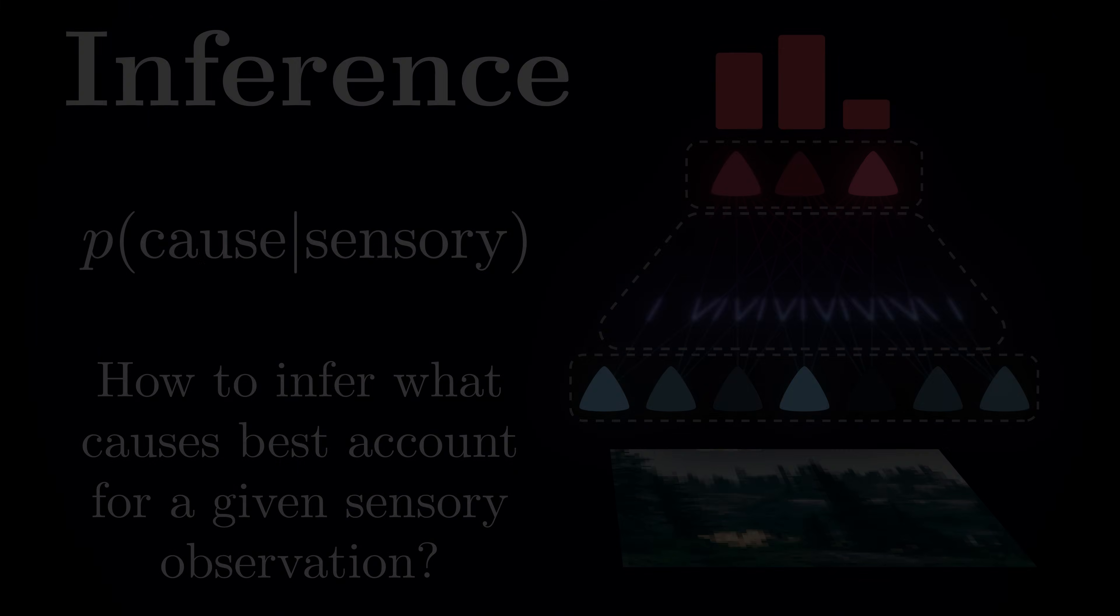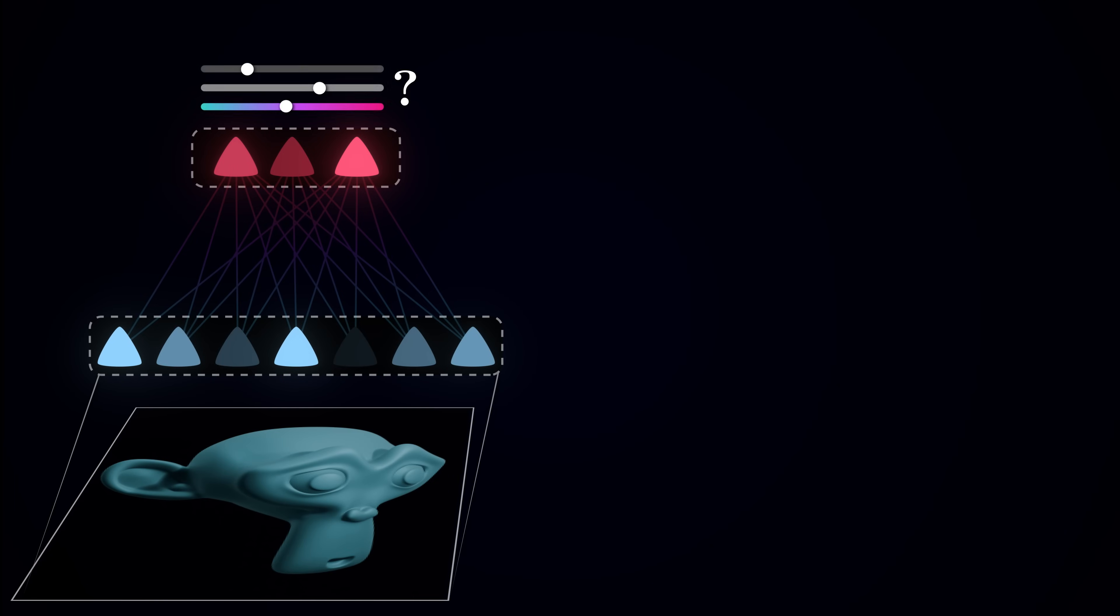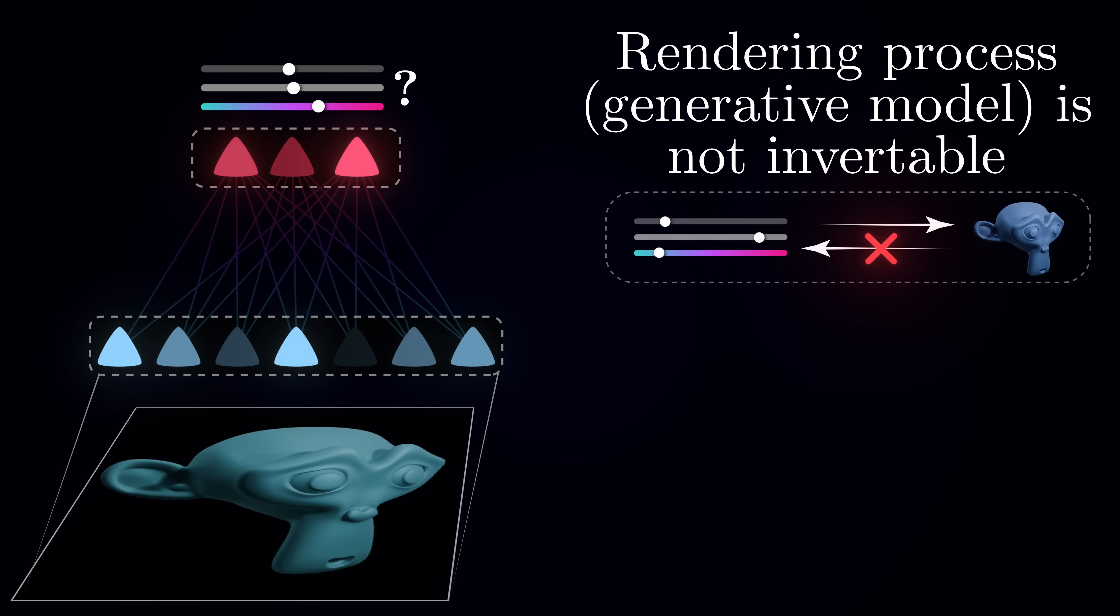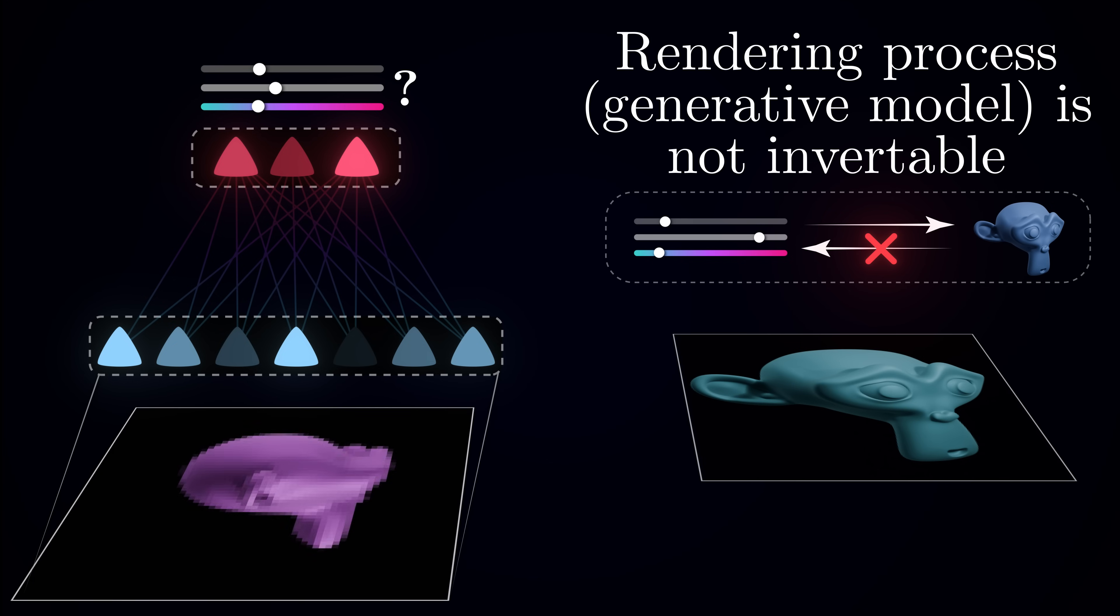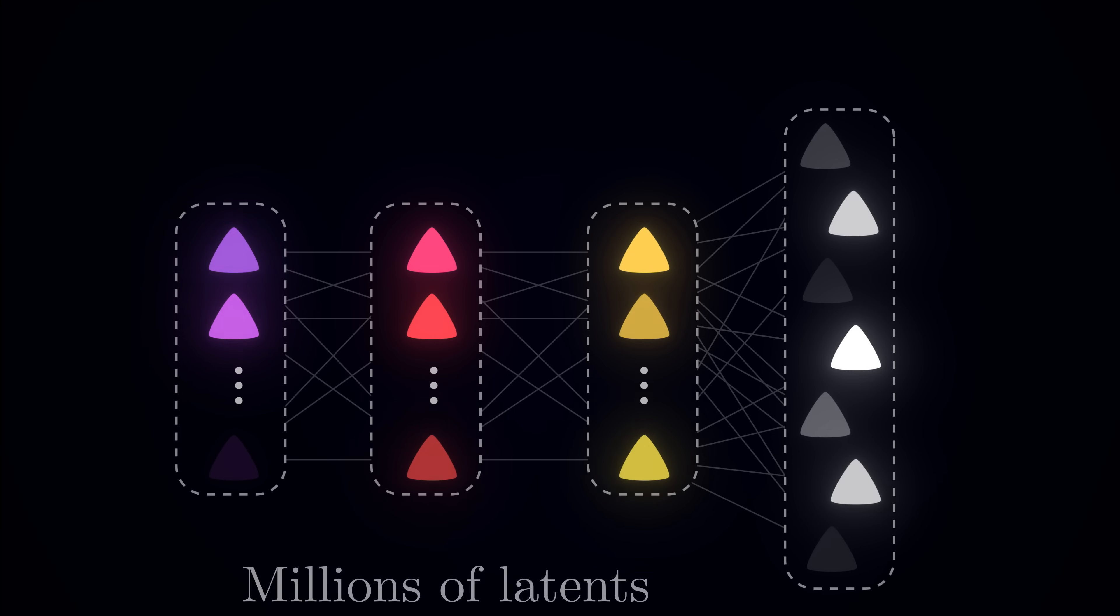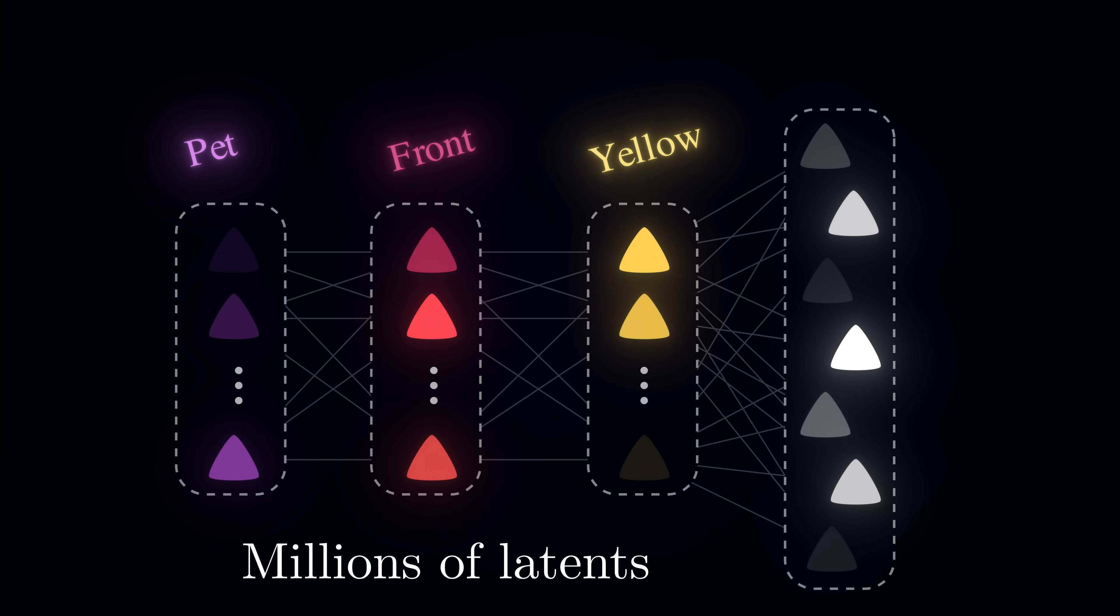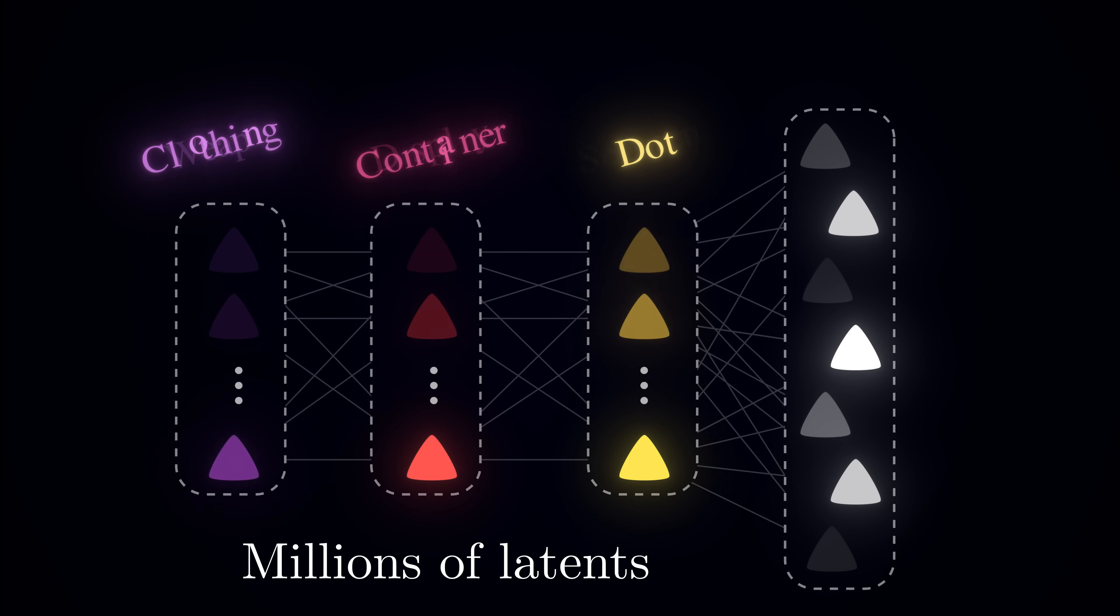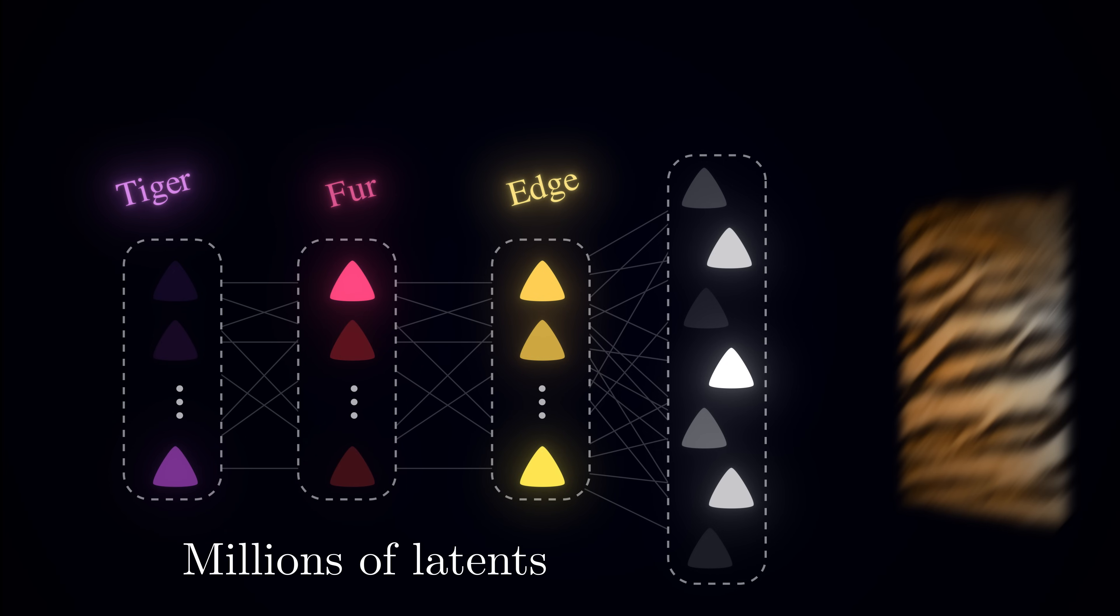Let's return to our Blender analogy. Imagine you are given just a final image and asked to figure out the slider positions that created it. This reverse problem faces a fundamental computational challenge. To find the right causes, in general, you would need to try every possible combination of slider positions, render an image from each one, and compare it with your target image. Even with just three sliders, each with a hundred possible positions, that's a million combinations to check. Your brain faces the same problem but on a much larger scale. It has millions of latent neurons, each with many possible activity levels. Checking every combination would take longer than the age of the universe. And yet, brains solve this problem nearly instantaneously. When you get a glimpse of an orange-striped pattern, you don't have time to test billions of possible causes. If that pattern really is a tiger, you need to figure it out fast.